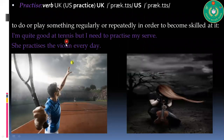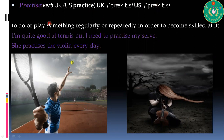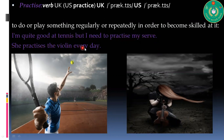Our next word is 'practice,' which is a verb. There is a common confusion: in British English it is spelled 'practise,' and in American English it is 'practice' with a C. The pronunciation is more or less the same. It means to do or play something regularly or repeatedly in order to become skilled at it. For example: I'm good at tennis, but I need to practice. She practices the violin every day.